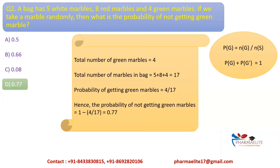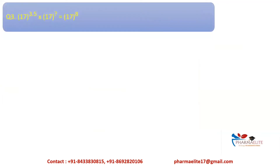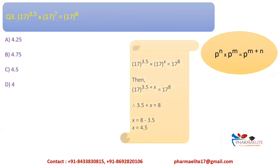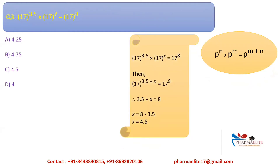The third question: 17 raised to 3.5 multiplied by 17 raised to (?) equals 17 raised to 8. This is based on the indices formula: P^N × P^M = P^(M+N). Since 17 is the common base, we apply this formula to get 3.5 + X = 8, and solve to get X = 4.5. The answer is option C, 4.5.